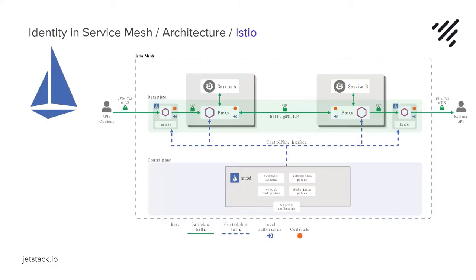We're now going to look at how service identity works with a number of different service mesh implementations — three of them — starting with Istio. This is the architecture of Istio focusing on the components used for security controls. Istio's control plane has a component called Citadel, now part of Istiod, which is responsible for providing the x509 TLS certificates to the Envoy-based proxies. Out of the box it's self-signed, but if you wish to integrate this into an existing PKI, there is a means to plug your own CA into Istio. Josh is going to demonstrate how to do this.